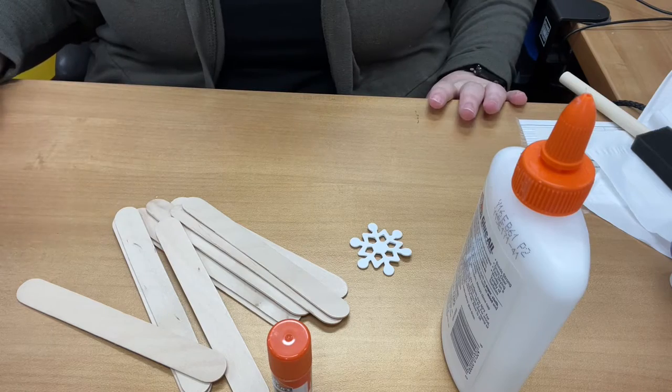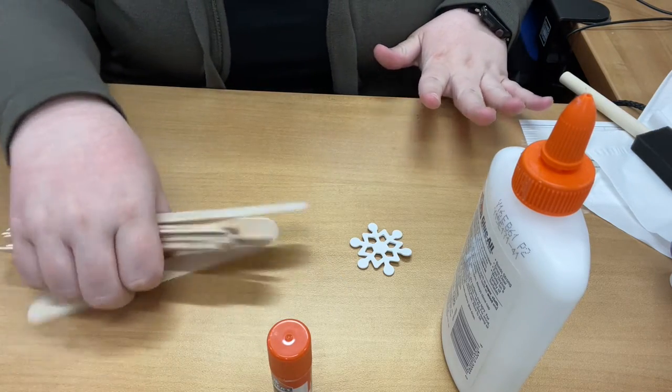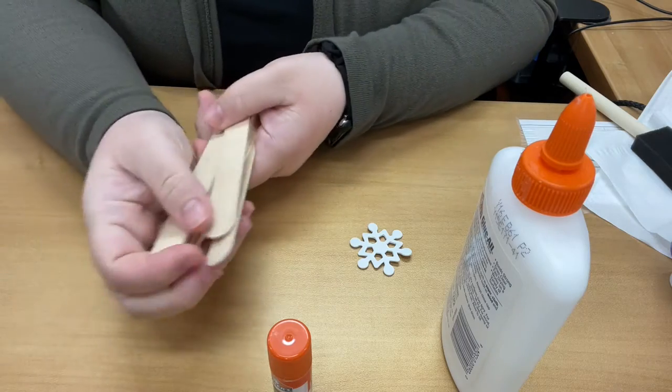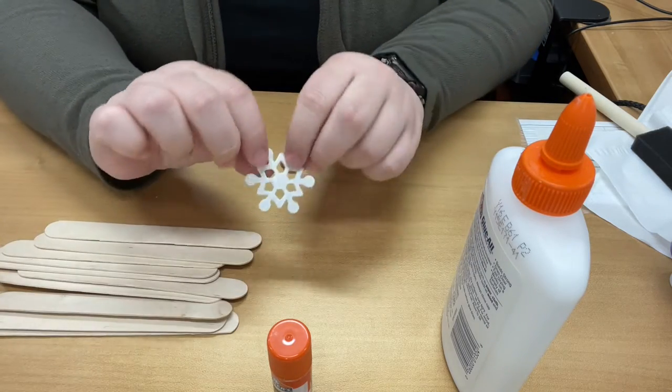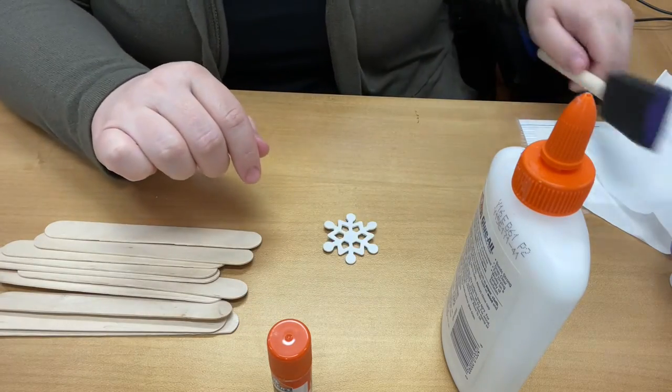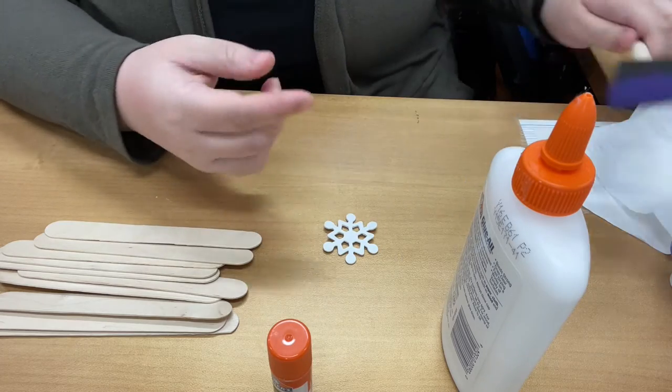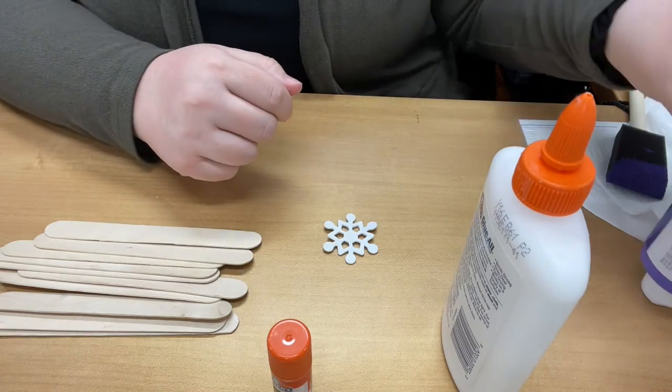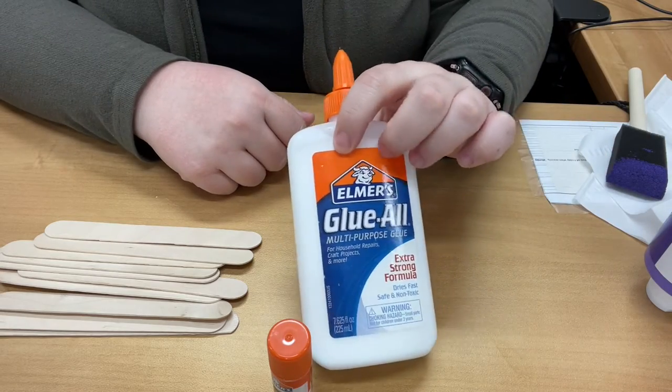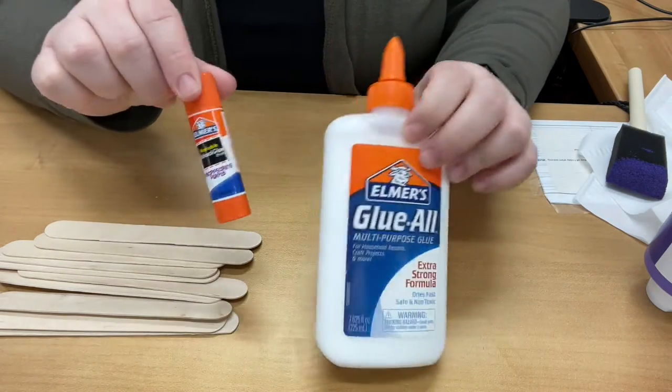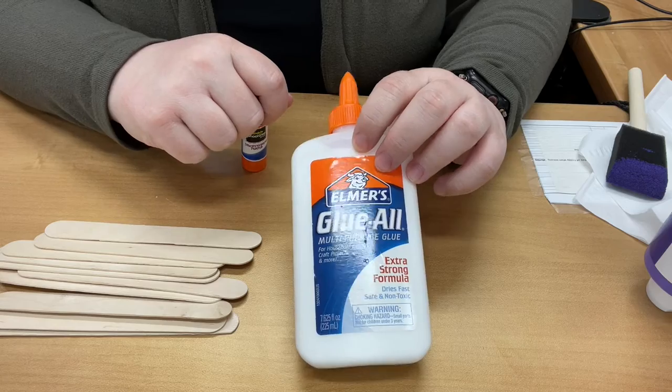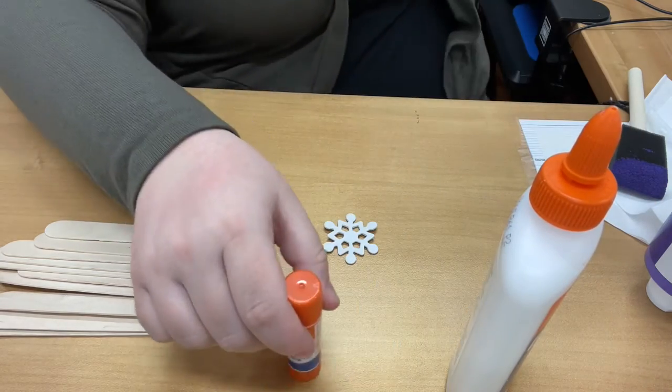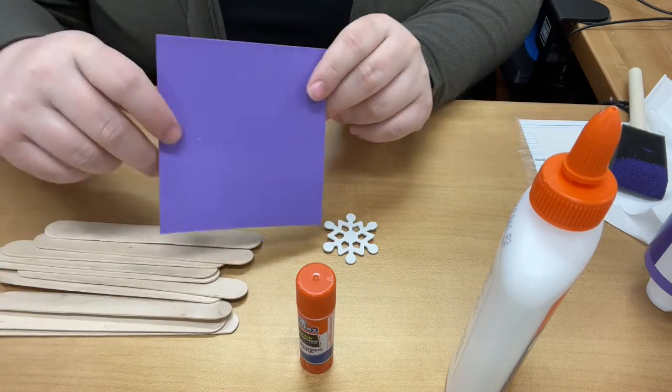Let's start by going over the materials you should have in your craft kit. You should have popsicle sticks, a snowflake, a foam paintbrush and a little container of paint. You're also going to need some glue. You're going to want a glue stick and liquid glue. You should also have a piece of purple paper.